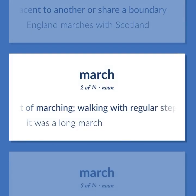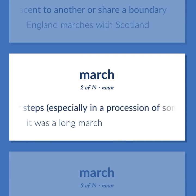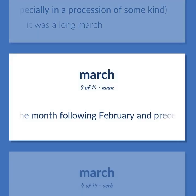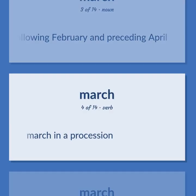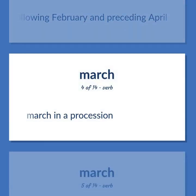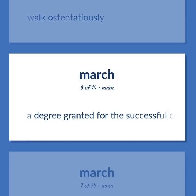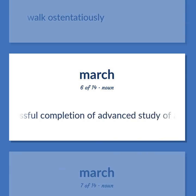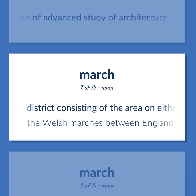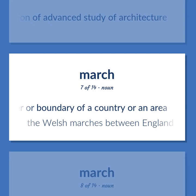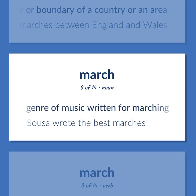MARCH: The act of marching — walking with regular steps, especially in a procession of some kind. 'It was a long march.' The month following February and preceding April. March in a procession. Walk ostentatiously. A degree granted for the successful completion of advanced study of architecture. District consisting of the area on either side of a border or boundary of a country. 'The Welsh marches between England and Wales.' Genre of music written for marching. 'Sousa wrote the best marches.'